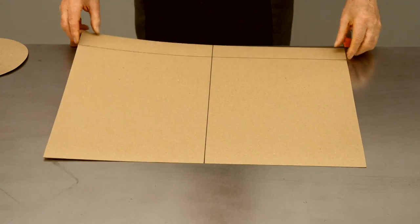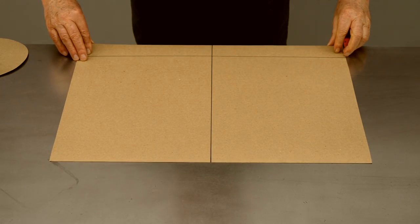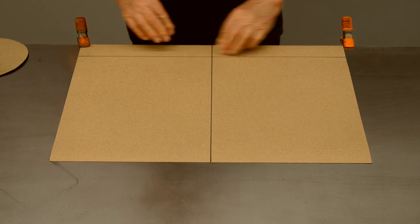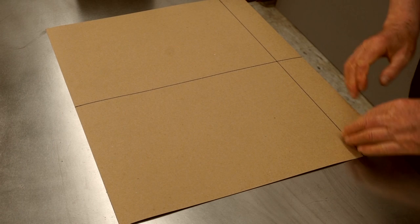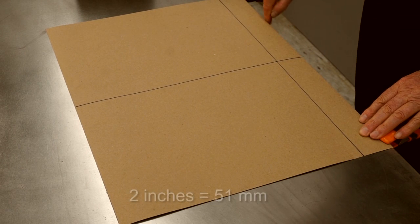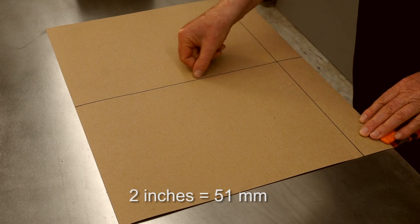The first step in making the dust pan is to make a full size layout of the top view of the pan itself. So I'll be working on heavy paper here, and I'm going to do my layout based on two lines. This line is spaced 2 inches from the front edge, and this is the center line.